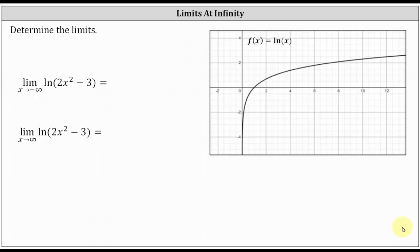We're asked to determine the limits at infinity. Notice both limits involve the same natural log function where f(x) equals the natural log of the quantity two x squared minus three. For the first limit, x is approaching negative infinity, and for the second limit, x is approaching positive infinity.